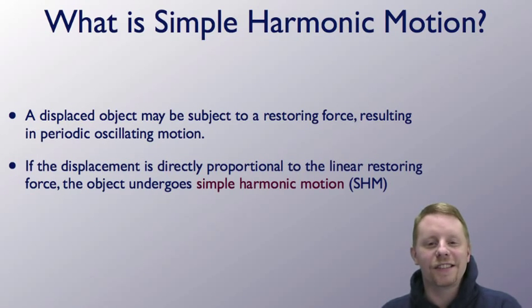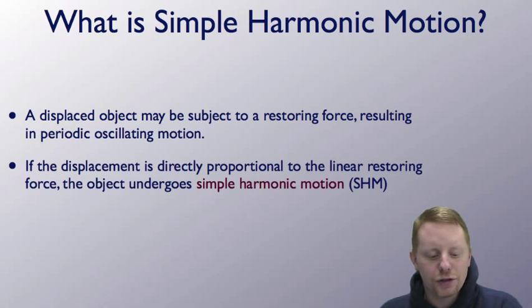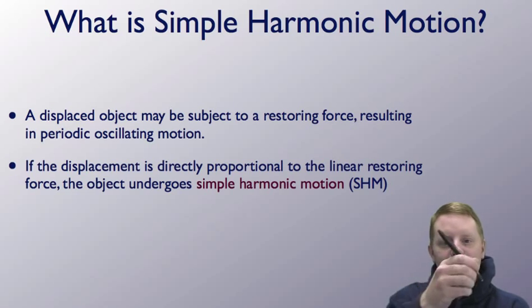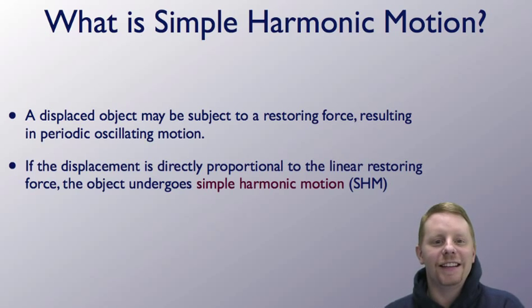So let's start by talking about what is simple harmonic motion. When a displaced object is subject to a restoring force, it can result in periodic oscillating motion. And if that restoring force is linearly related or directly proportional to the displacement, we get what we call simple harmonic motion. Simple harmonic motion is everywhere in nature, everything from a pendulum swinging back and forth to walking through the woods when you knock a tree branch and it vibrates back and forth. Simple harmonic motion is basically nature's response to a disturbance, so it's very useful and we see it all over the place in our world.